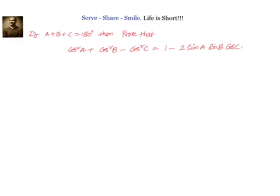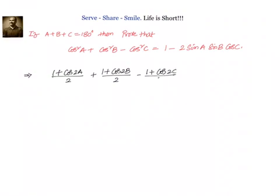Our first step: cos square A can be written as 1 plus cos 2A by 2. Cos square B can be written as 1 plus cos 2B by 2. Minus cos square C can be written as minus 1 plus cos 2C divided by 2. Let us simplify that. We will have 1 by 2 plus 1 by 2 minus 1 by 2, plus cos 2A by 2 plus cos 2B by 2 minus cos 2C by 2.